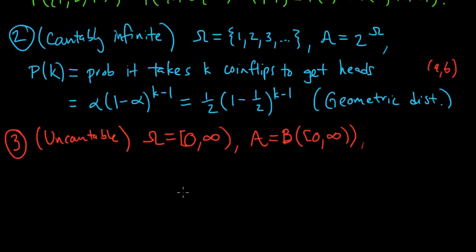And we will define a probability measure by its values on the following sets. We're going to consider sets of the form intervals from 0 to x. And we'll define this to be 1 minus e to the minus x for any x positive.